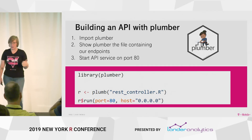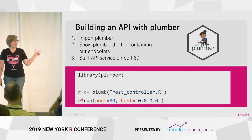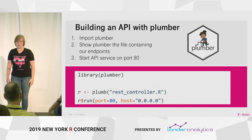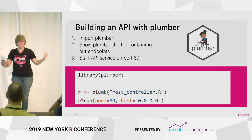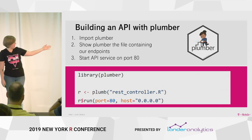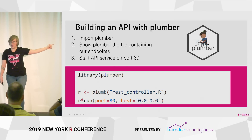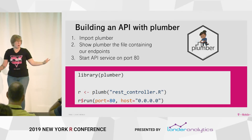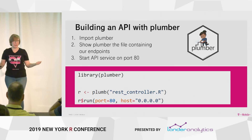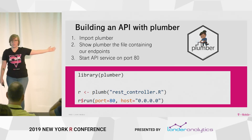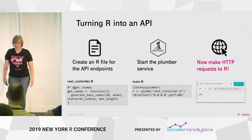All you have to do is import Plumber, show Plumber where the endpoints are. Endpoints are what comes after the slash — so if I went to weather.com/Seattle, the endpoint is Seattle, it's just a part of the URL. Open a port to the internet, which means that anybody can talk to you, import Plumber, and you've done it. You've built an API. So when engineers make this sound really complicated, it's three lines of R code. Anybody here can do it.